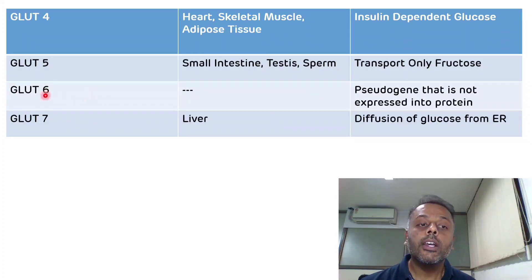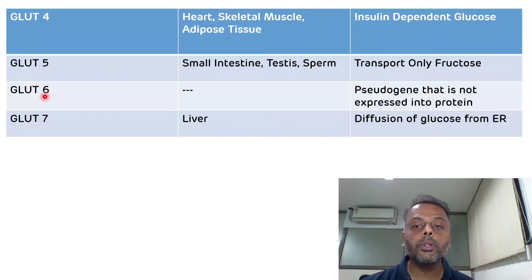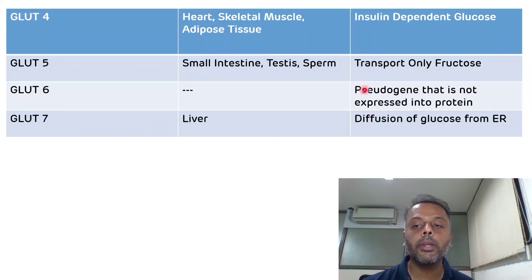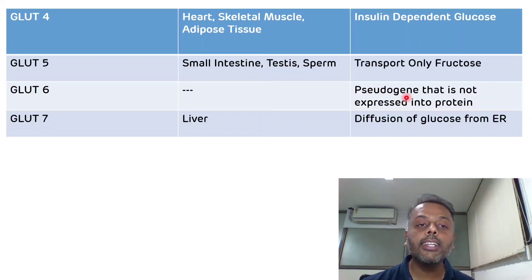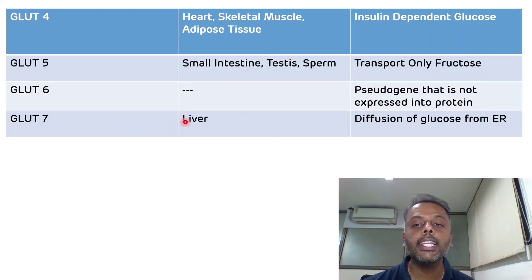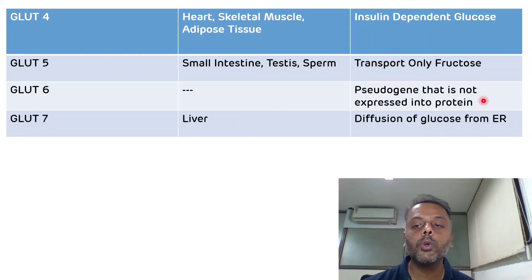Glucose transporter 6 (GLUT6) is an example of a pseudogene — it is not expressed into a protein. The last glucose transporter discussed is GLUT7, which is present in the liver endoplasmic reticulum and takes part in the diffusion of glucose from the endoplasmic reticulum.